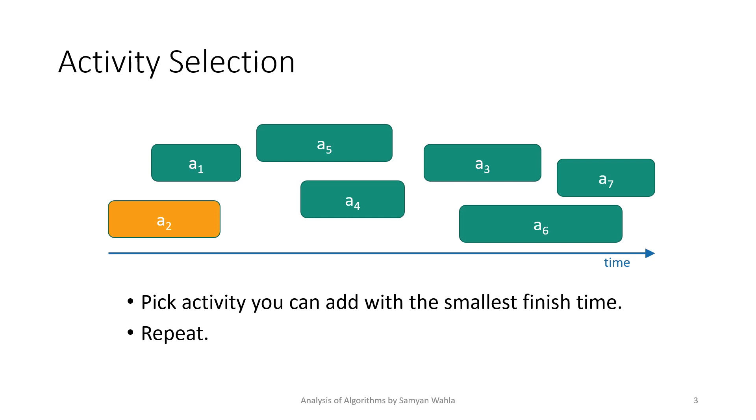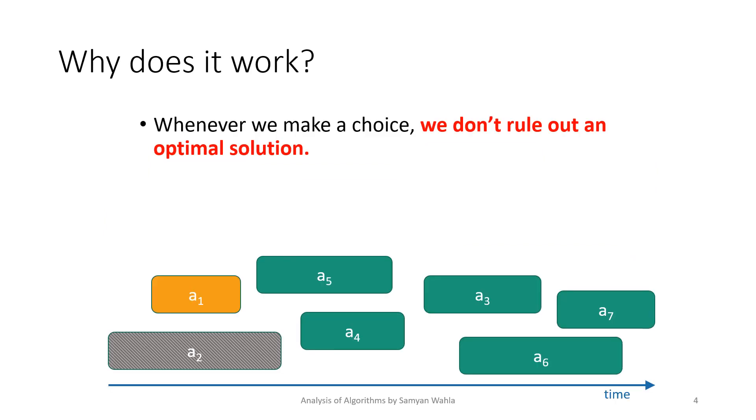In this video, we have to prove whether this greedy choice gives us an optimal solution or not. If it gives an optimal solution, then our algorithm is correct. This approach works because whenever we make a choice in dynamic programming or greedy algorithms, we don't rule out an optimal solution.